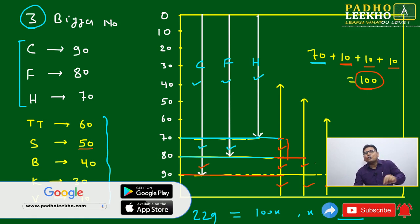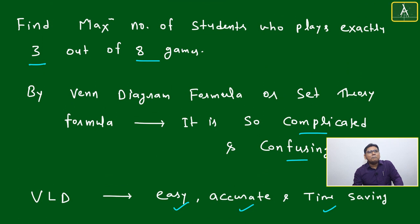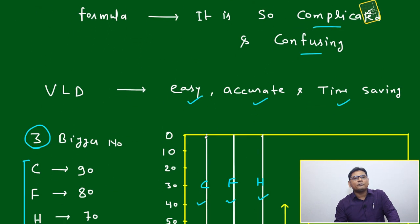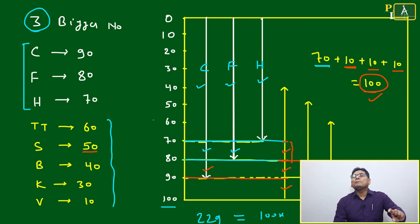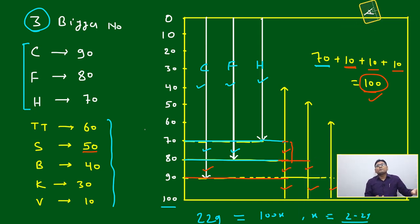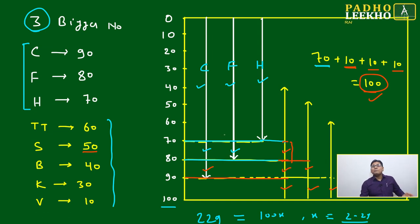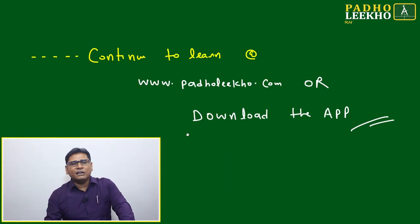The question asks for the maximum number of students playing exactly three out of eight games. The answer is 100 — meaning all 100 students can play three or more games. The question becomes more interesting when asking for the minimum instead. To minimize the overlap, we alternate line directions: place Cricket from the top, Football from the bottom — this minimizes the overlap zone and reduces the count of students in any given overlap category.